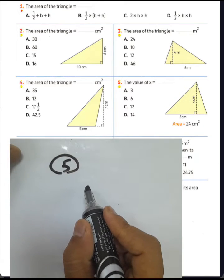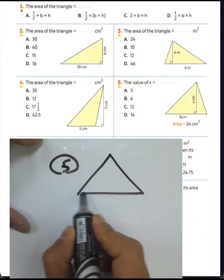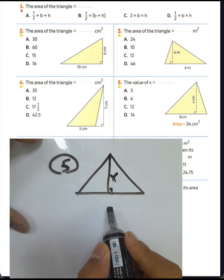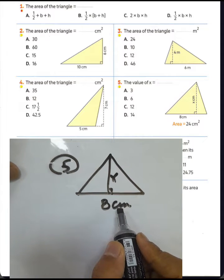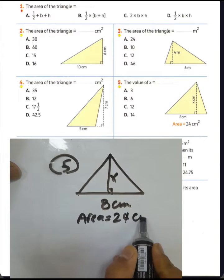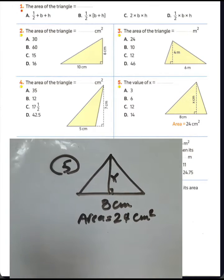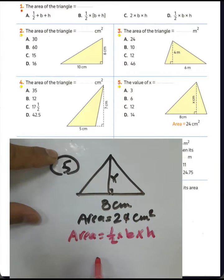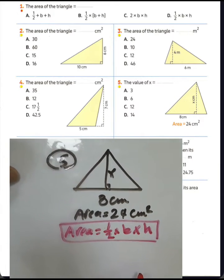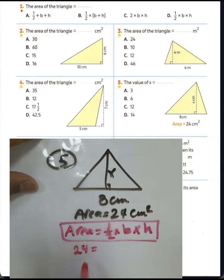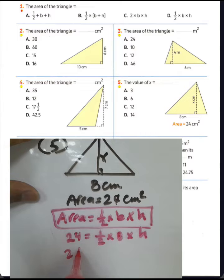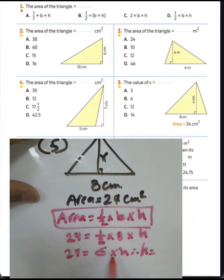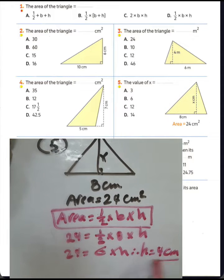Question number five: find the value of x, which refers to the altitude or height. The base was 8 centimeters and the area was 24 square centimeters. Using the rule: area equals half times base times height — 24 equals half times 8 times height. Half of 8 is 4, so the height equals 24 divided by 6, which is 4 centimeters.